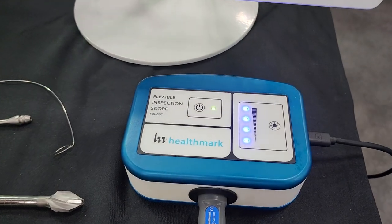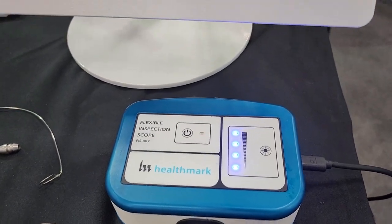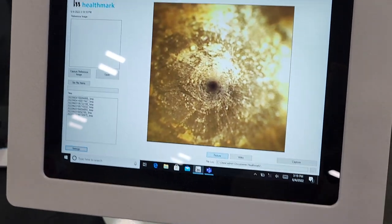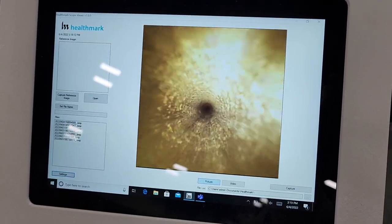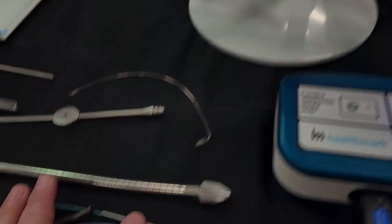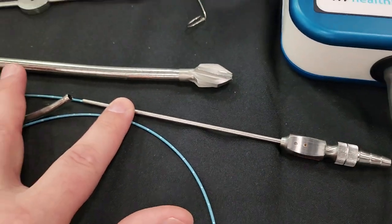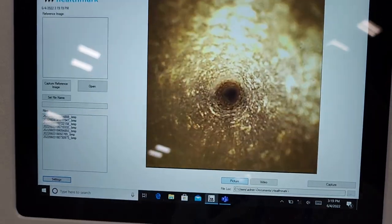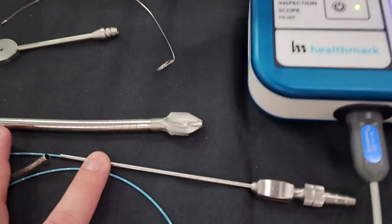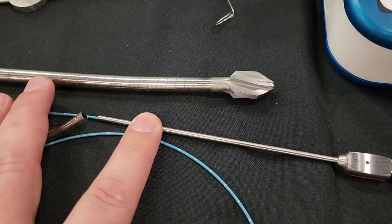And this box right here, you can attenuate the brightness as we send that tiny little camera down this tiny little rigid scope. That's not even a rigid scope. Down this tiny trocar.